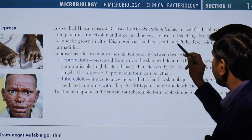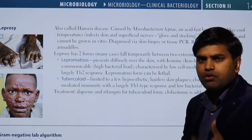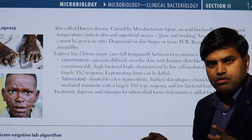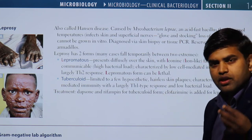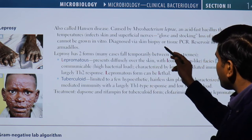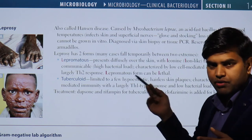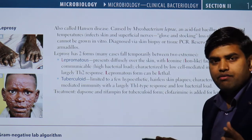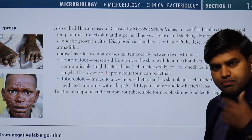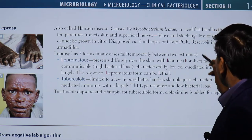Mycobacterium leprae likes cool temperatures, affecting skin and superficial structures, causing globe-and-stocking pattern loss of sensation. Importantly, it cannot be grown in vitro. For culture, animal inoculation is required. For diagnostics, we use skin biopsy or tissue PCR — a skin biopsy can be stained with a modified AFB stain at 5% acid, and if organisms are seen, it confirms Mycobacterium leprae.